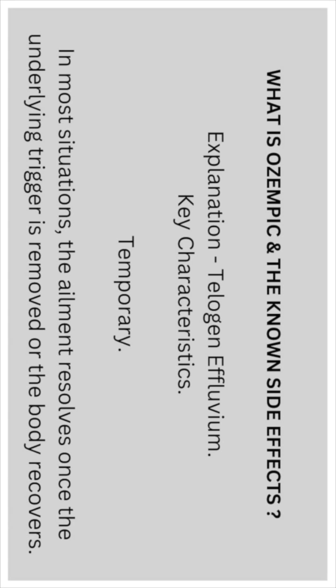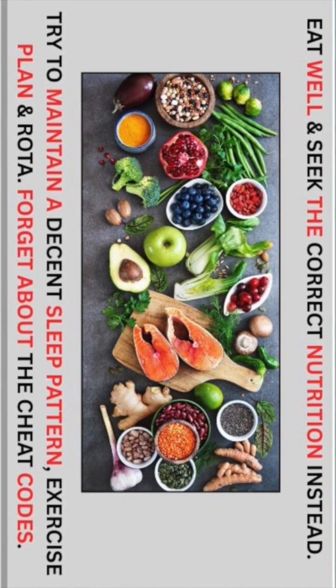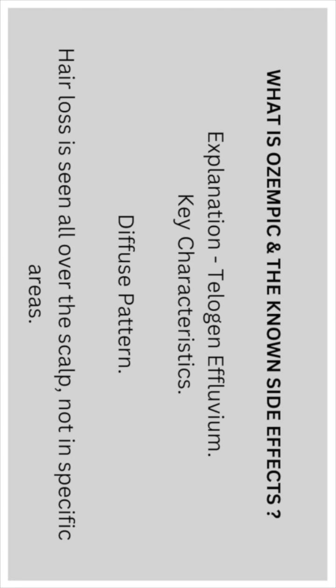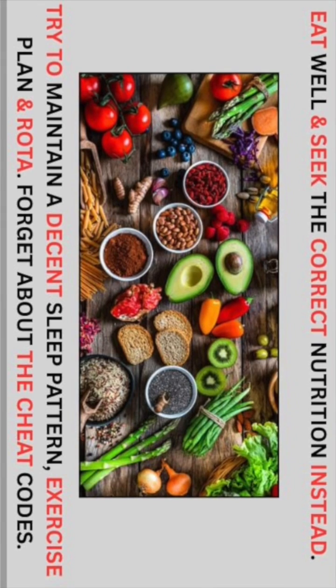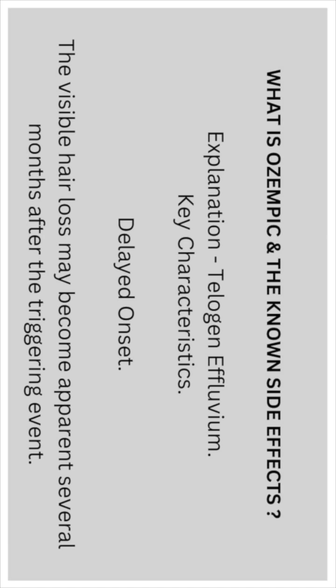Key characteristics: it can be temporary — in most situations, the condition resolves once the underlying trigger is removed or the body recovers. It's not hereditary; telogen effluvium is not an inherited condition. It follows a diffuse pattern, meaning hair loss is seen all over the scalp and not in a specific area. There is also a delayed onset — the visible hair loss may become apparent several months after the triggering event.